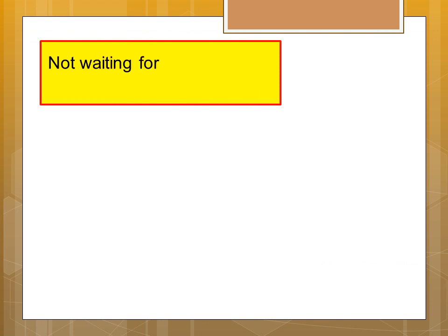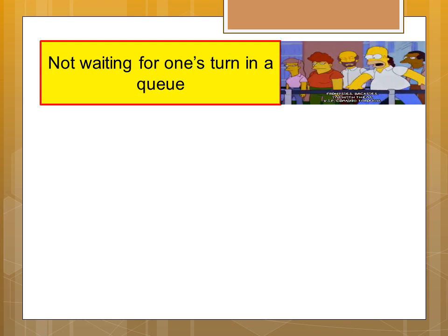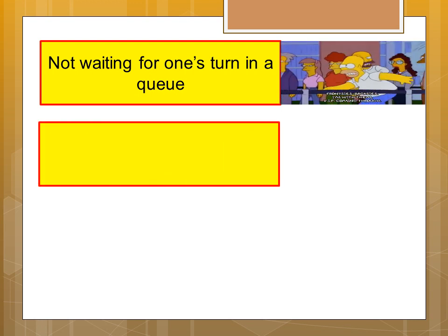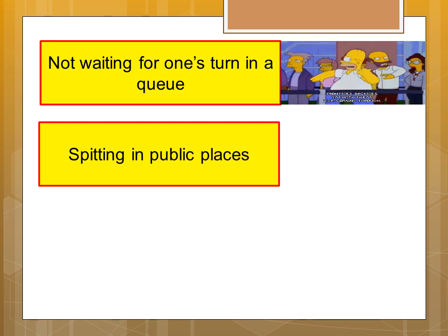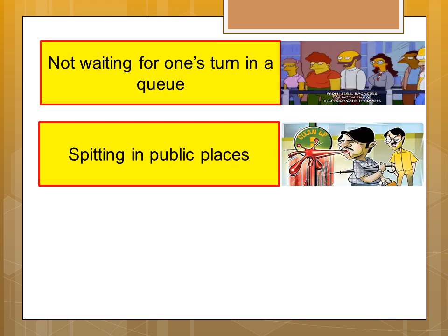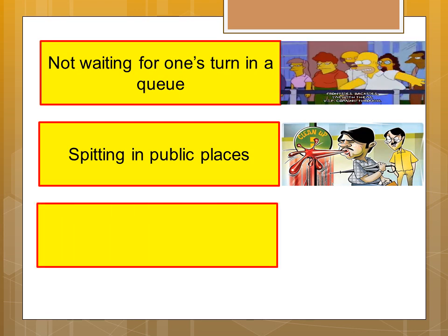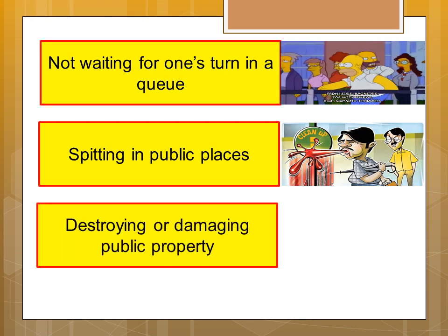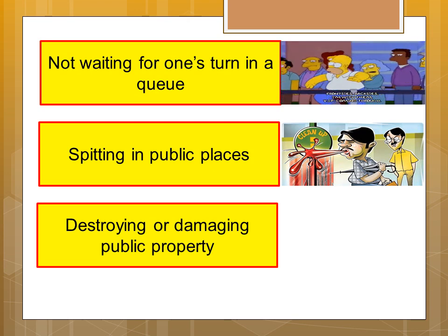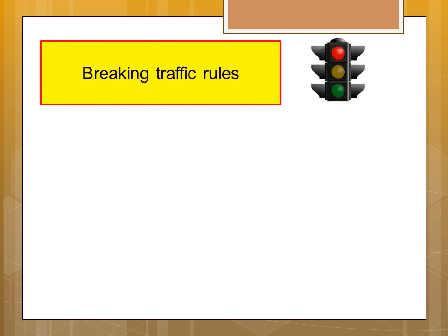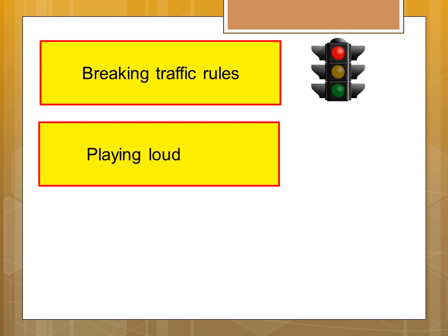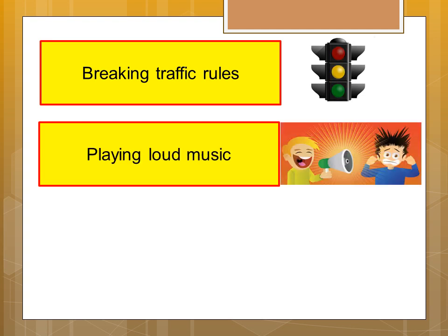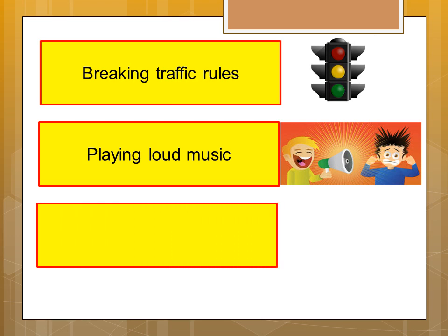Some examples of lack of civic sense that we see among people around us are: not waiting for one's turn in a queue and moving to the front by breaking the queue; spitting in public places; littering in public places such as parks, playgrounds and so on; destroying or damaging public property; breaking traffic rules; disturbing public peace by playing loud music; and honking your vehicles unnecessarily.